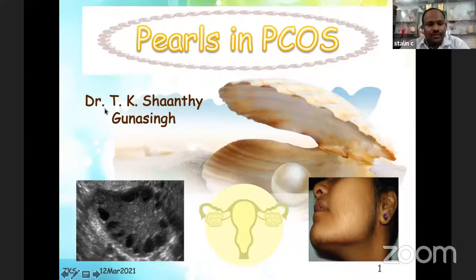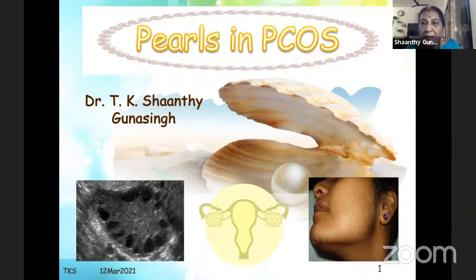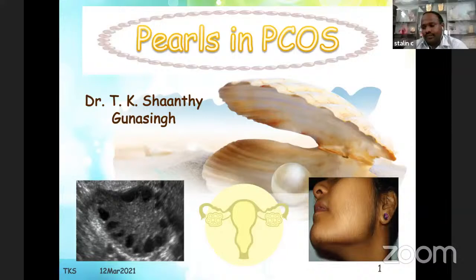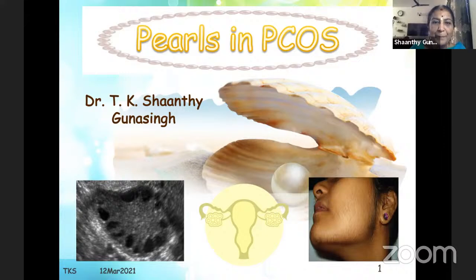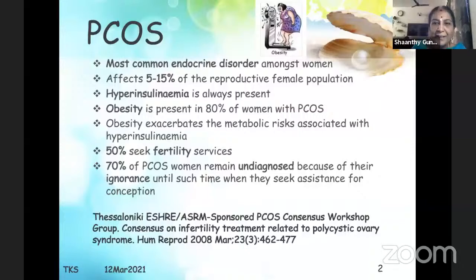Good evening to one and all. I thank Shield Healthcare for having given me an opportunity to talk on PCOS. We know that PCOS is the most common endocrine disorder among women — it affects five to fifteen percent of the reproductive female population. Hyperinsulinemia is always present and obesity is present in 80 percent of women with PCOS, exacerbating the metabolic risk. Fifty percent seek fertility services directly, and 70 percent of PCOS women remain undiagnosed because of their ignorance until they seek assistance for conception.